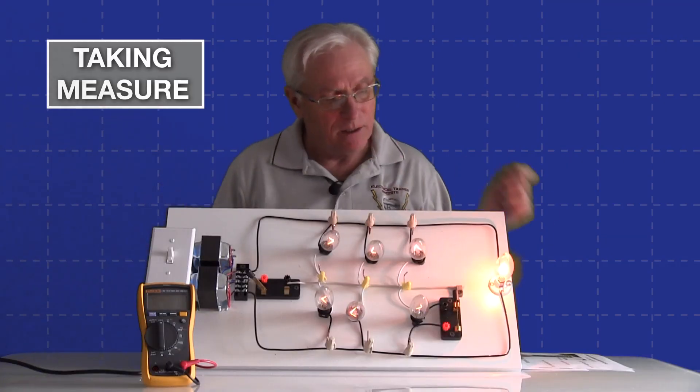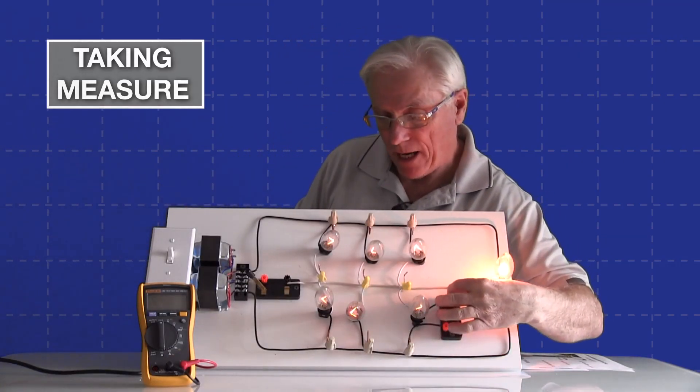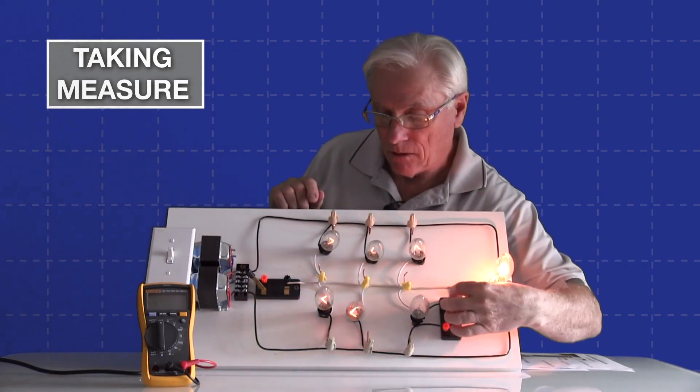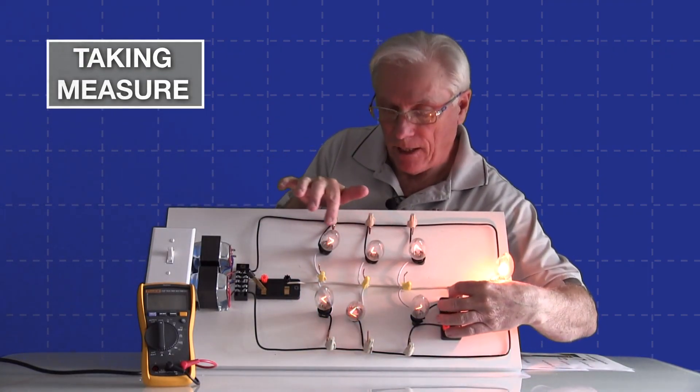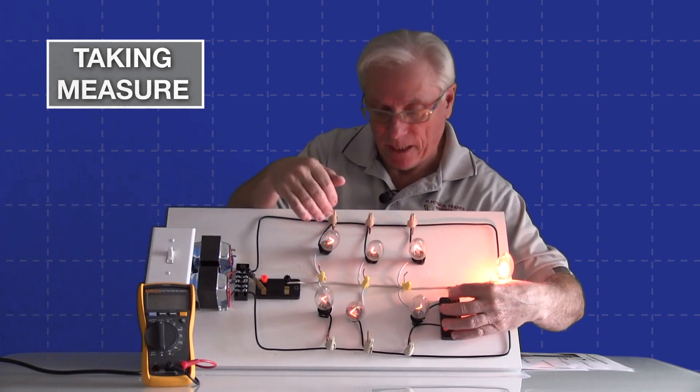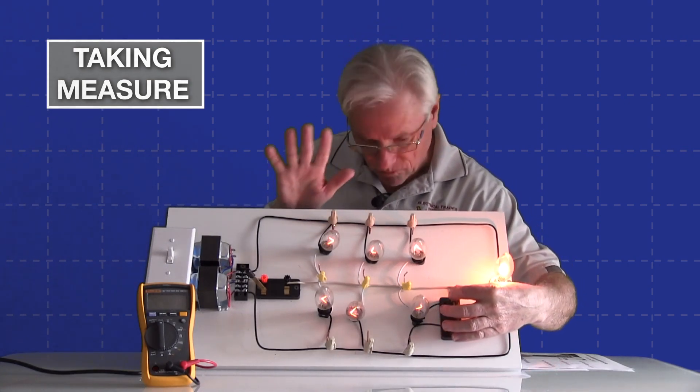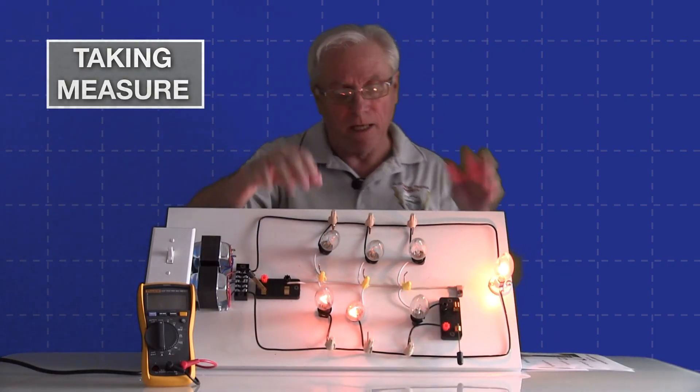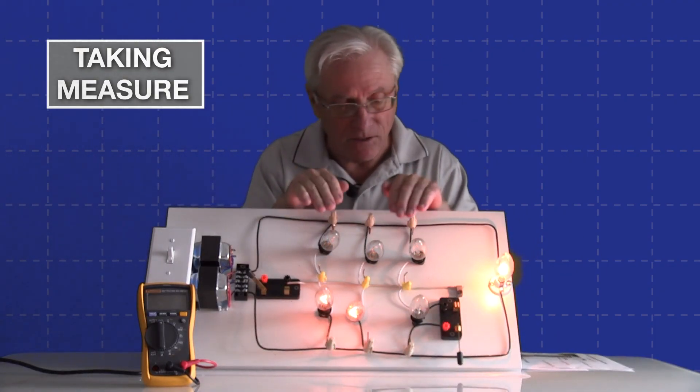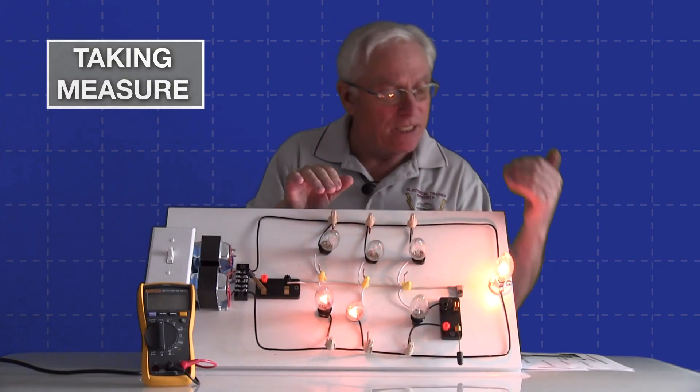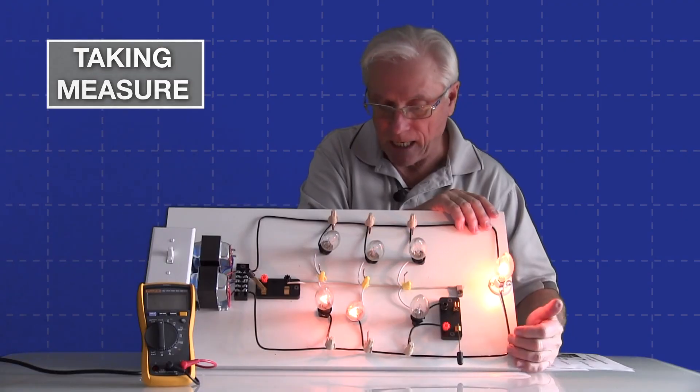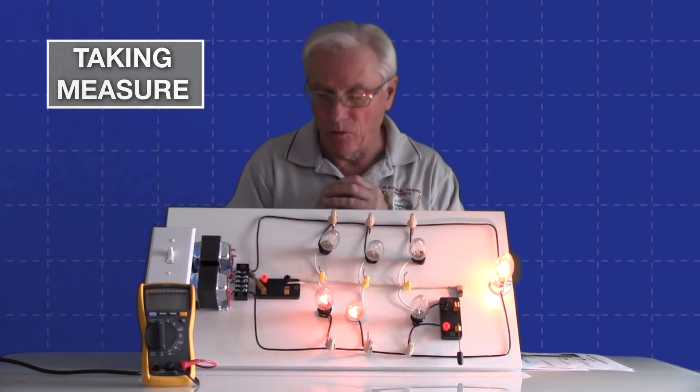But once that lamp is open we have a problem if I lose my neutral. The minute I open up this one lamp and drop it out, you can see what happened - these two got very bright and these got dim. The reason is we changed the voltage balance in what is essentially a series connection.